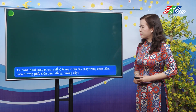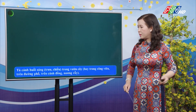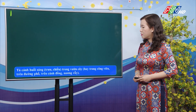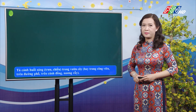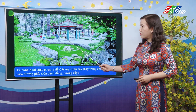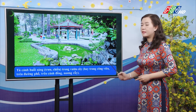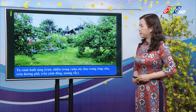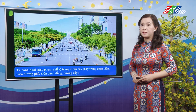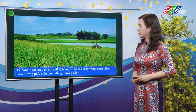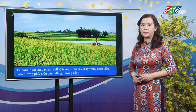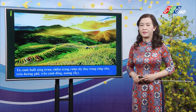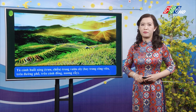Trong phần tả cảnh, các con sẽ có một số đề như: tả cảnh buổi sáng, trưa, chiều trong vườn cây hay trong công viên, trên đường phố, trên cánh đồng hoặc nương rẫy. Đây là hình ảnh một công viên vào buổi sáng, có rất nhiều người đến đây để tập thể dục. Hay là cảnh một cái vườn cây, cảnh đường phố, cảnh cánh đồng, và cảnh nương rẫy. Các con sẽ chọn một trong những cảnh này để viết lại bài văn.